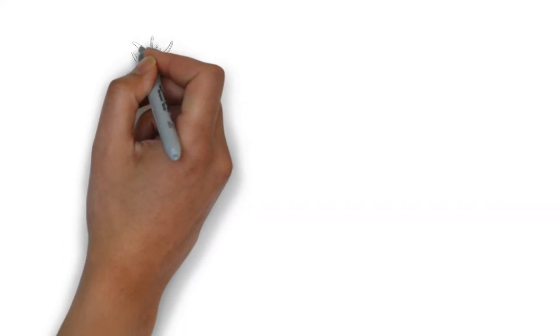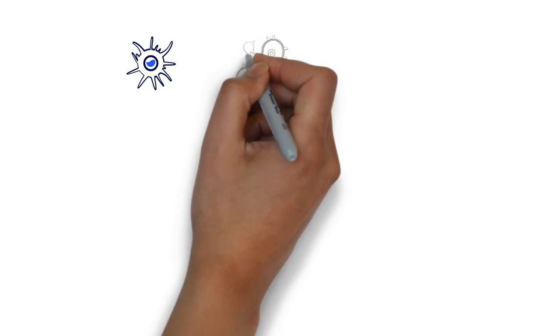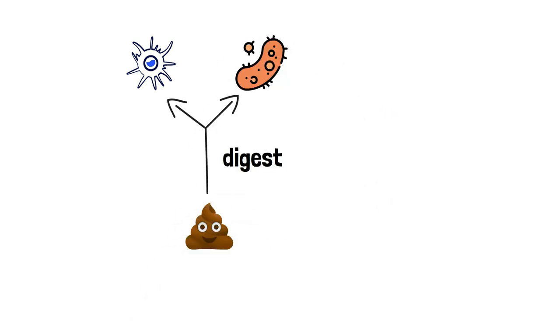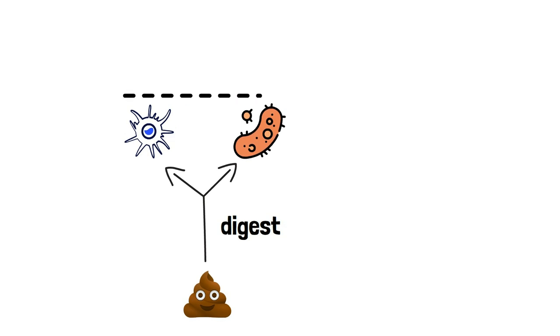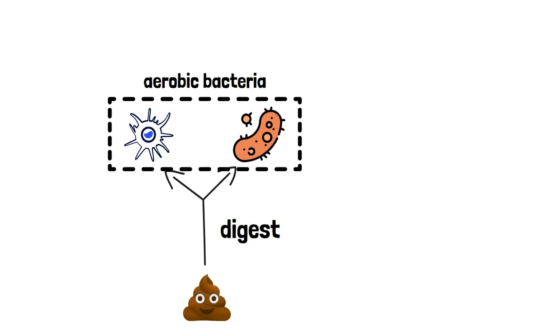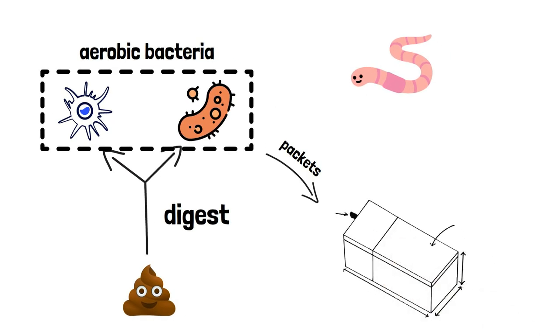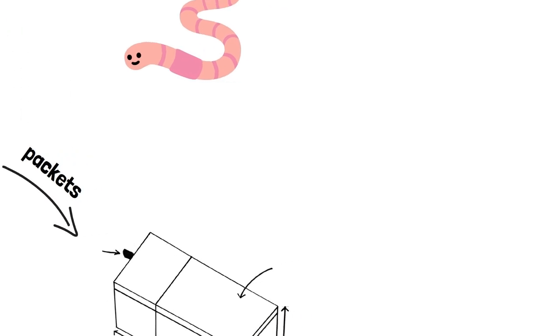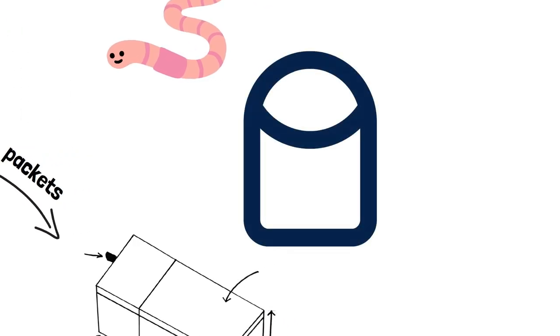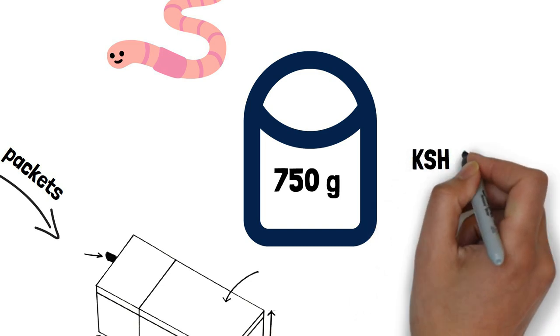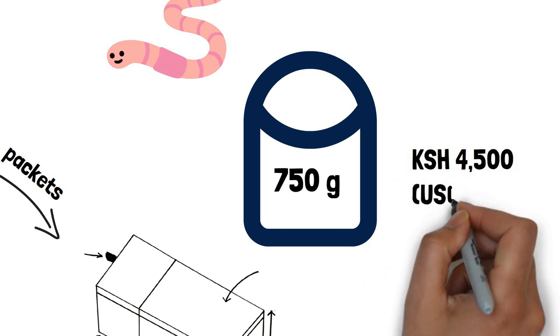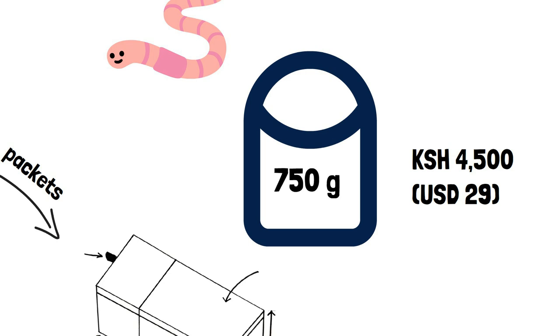Seeding means introducing the organisms that will digest the solid waste inside a biodigester. Organisms here are aerobic bacteria or earthworms for example. The bacteria come in packets, which comes as part of the cost of installing the biodigester. You can also buy them separately. For example, a 750 gram packet costs 4,500 Kenyan shillings from hallmark biodigesters in Kenya.